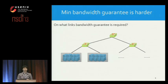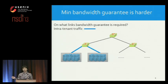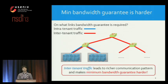Let's see why inter-tenant traffic brings more challenges to network sharing requirements. For minimum bandwidth guarantee, we need to ensure there is enough bandwidth on every link that traffic flows. For intra-tenant traffic with one tenant, we only need to guarantee bandwidth on two links. But if we consider inter-tenant traffic, these VMs can communicate with any other VMs in the data center, meaning we need to ensure enough bandwidth on all links. As we allow inter-tenant traffic, it leads to richer communication patterns, making minimum bandwidth guarantee harder.